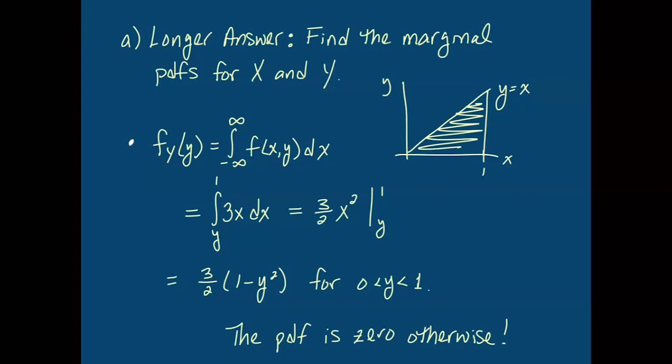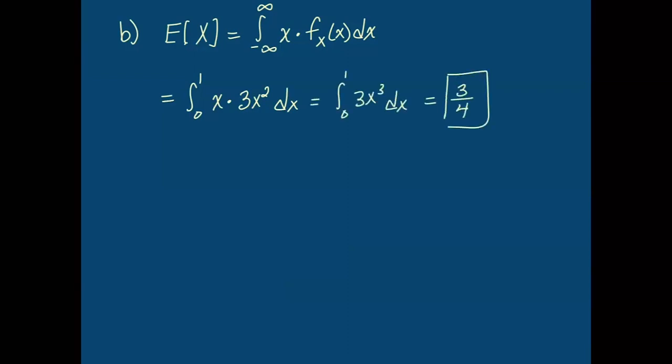For part B of this problem, we want to find the expected value of X. The definition of the expected value of X, when X is continuous as it is here, is the integral of X times the PDF for X. This is the marginal PDF for X, so if you took the short answer to part A, you would now have to find that marginal PDF for X. We already found it though - it is 3X² on the region from 0 to 1. So putting an X in front of it, we end up with the integral of 3X³ from 0 to 1 and an answer of 3/4.